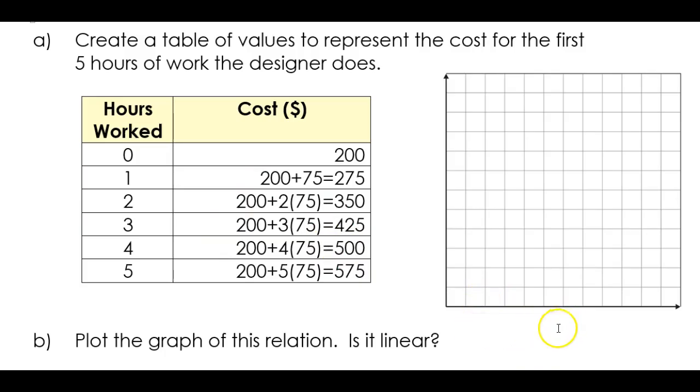So I'm going to first label my axes. So I've got hours worked on my x-axis, and that's because it's my independent variable. And cost, because the cost depends on the number of hours worked, I'm going to put cost on my vertical axis. So I want to use up as much of my graph space as possible.